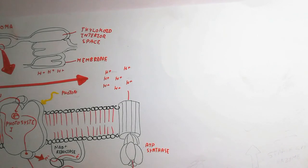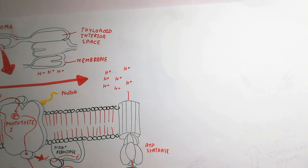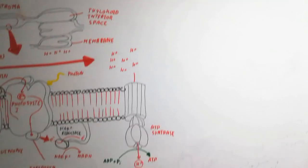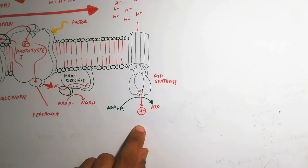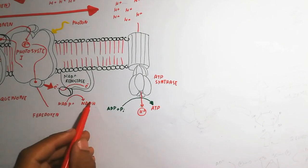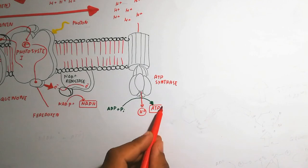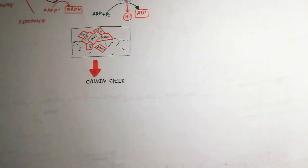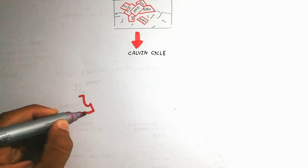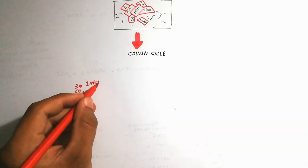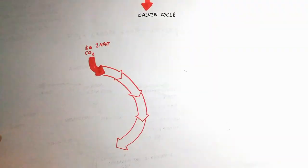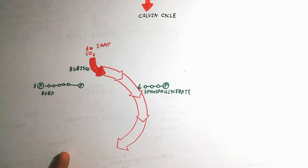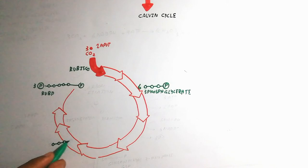The stroma is on the outside of the thylakoid lumen. Electrons move outward and drive conversion of ADP and inorganic phosphate to ATP. Large amounts of NADPH and ATP are produced and are ready to enter the Calvin cycle, which is located in the stroma — the outer region of the thylakoid membrane.